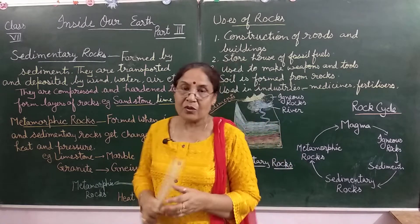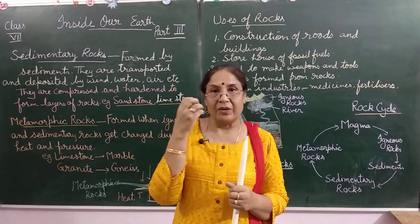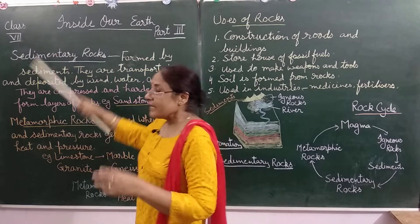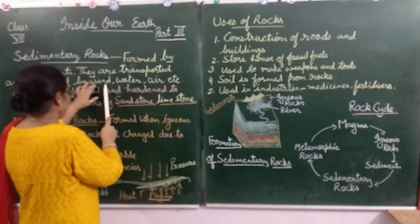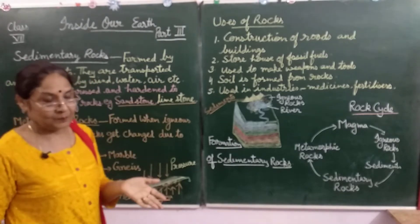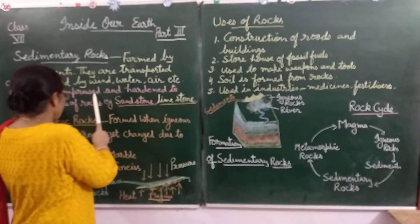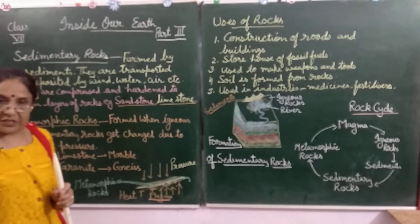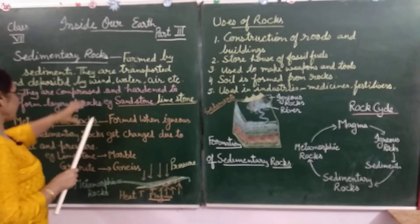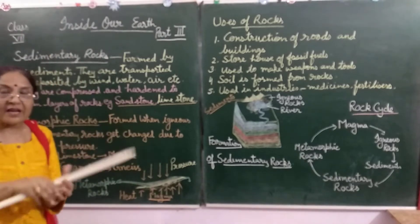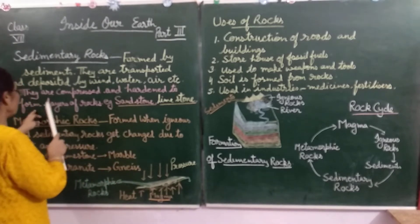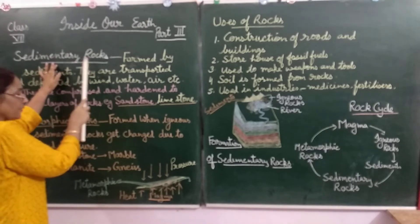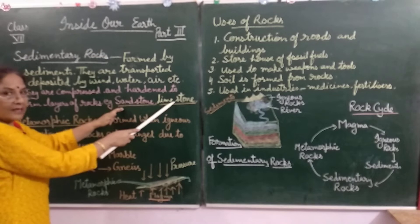Weathering and erosion are continuous processes that convert rocks into small particles called sediments. These sediments are carried by wind, water, air, and glaciers. When deposited in one place, because of heat and pressure, they are compressed and hardened to form layered rocks known as sedimentary rocks. Examples include sandstone and limestone.